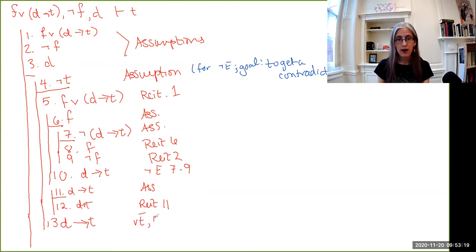So this is disjunction elimination. And we cite line five, lines, because it's a sub proof, six to ten and eleven to twelve. So disjunction elimination always needs to cite one formula and two sub proofs.